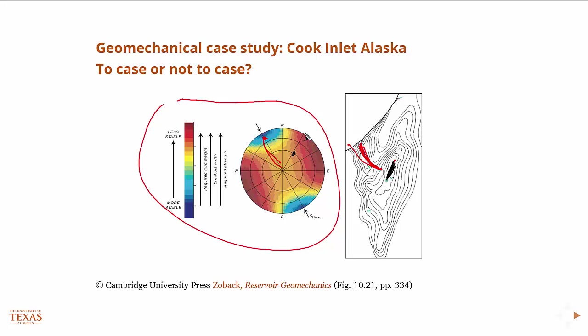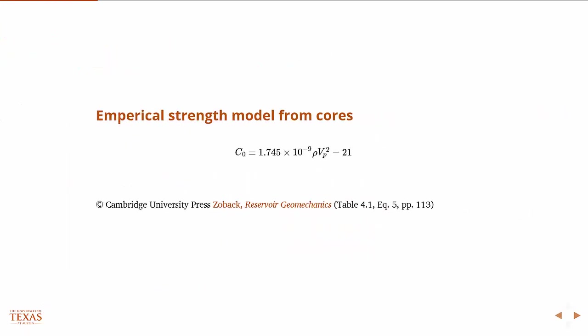So if they'd had the geomechanical model or the information up front, then they would have known this and they could have known to either not drill in that direction or in the kickoffs into these regions that were less stable, then they knew that they would need casing and sufficient amount of casing. So the next thing is then, it's sort of an aside, but it also has to deal with the kind of strength things that we've looked at.